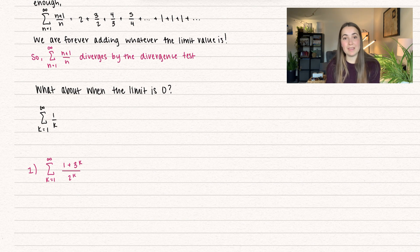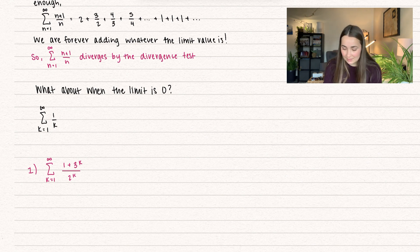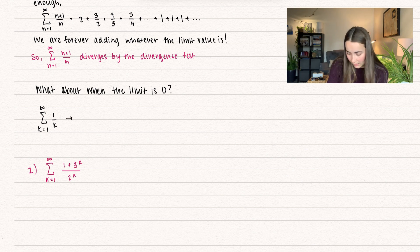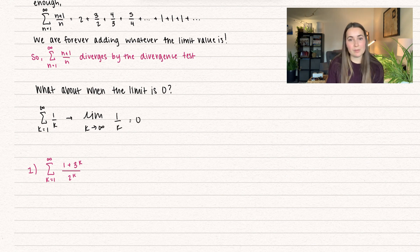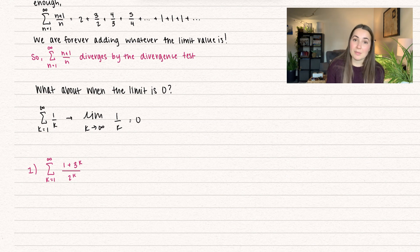What about when the limit is equal to 0? You might think it should converge because at some point we're just adding 0, but that is not always the case. Consider the harmonic series: from k equals 1 to infinity of 1 over k. We take the limit as k approaches infinity of 1 over k, which goes to 0. But the harmonic series diverges — I have a proof in my previous video. That's why if the limit equals 0, the test is inconclusive.